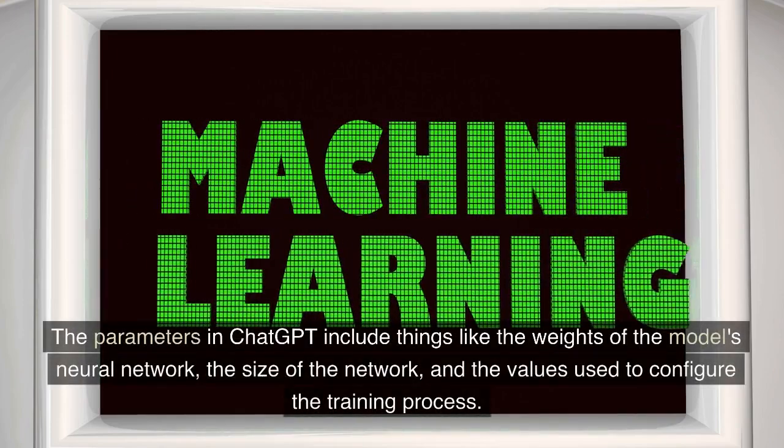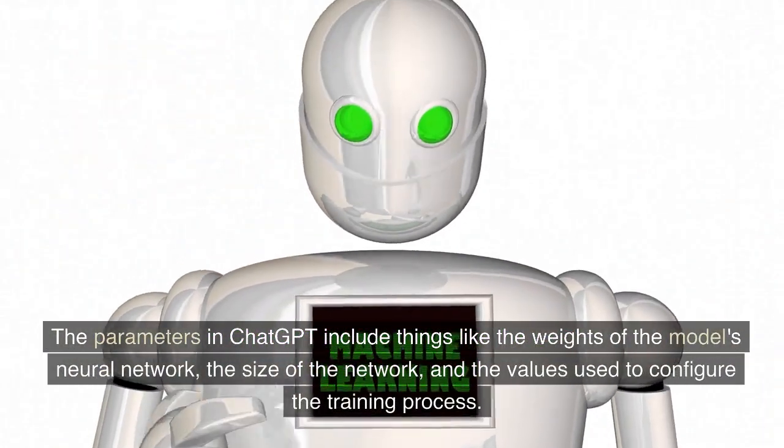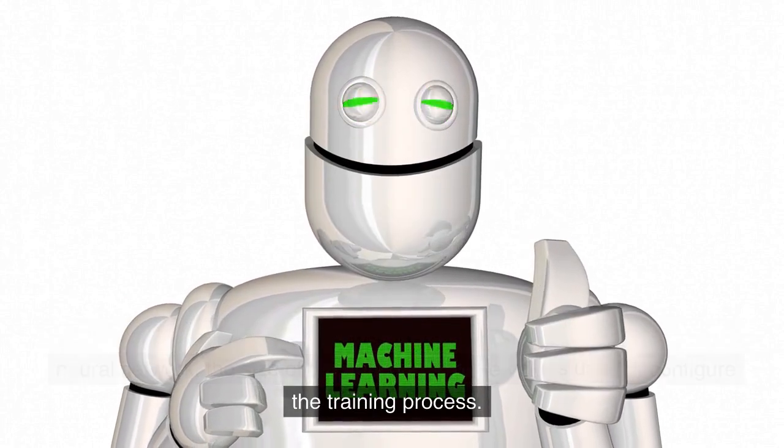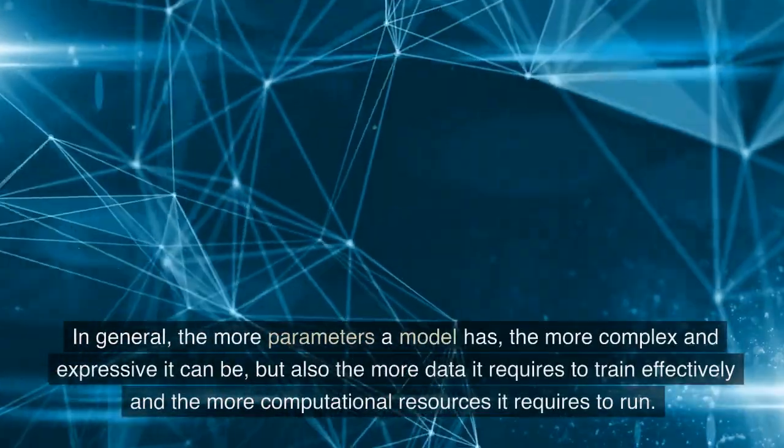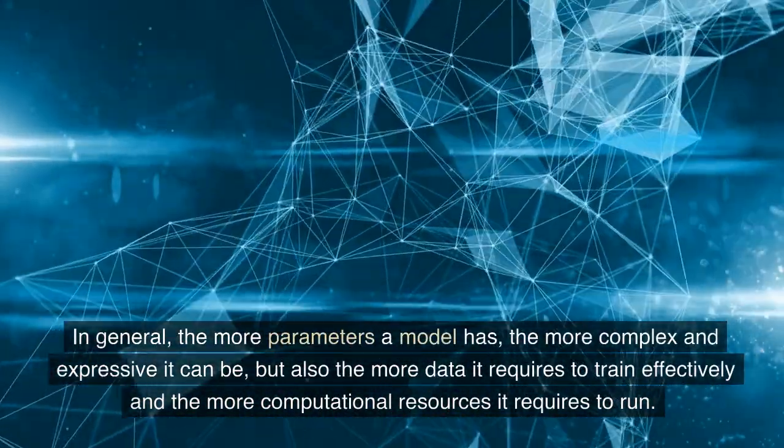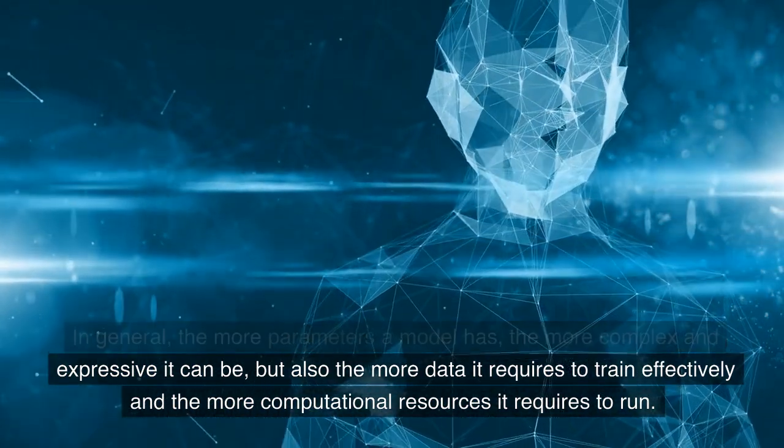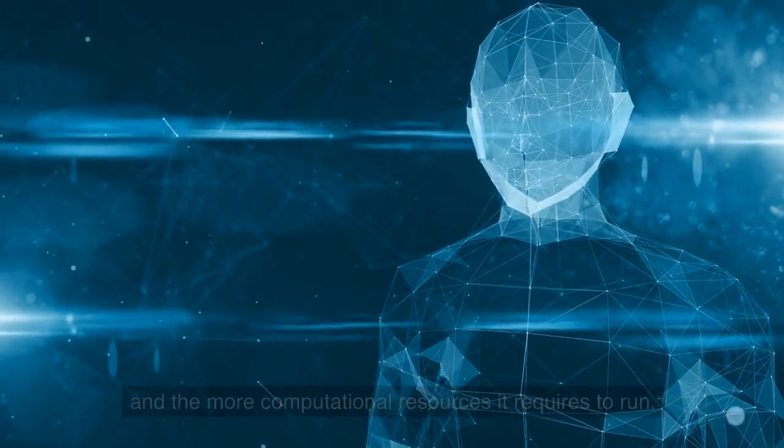The parameters in ChatGPT include things like the weights of the model's neural network, the size of the network, and the values used to configure the training process. In general, the more parameters a model has, the more complex and expressive it can be, but also the more data it requires to train effectively and the more computational resources it requires to run.